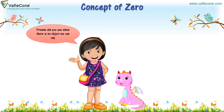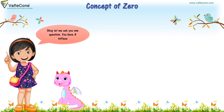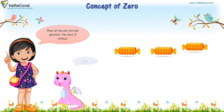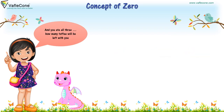Friends, when there is no object, we can say we have zero of that object. Let me ask you one question. You have three toffees, and you ate all three. How many toffees will be left with you? I will have zero toffees.